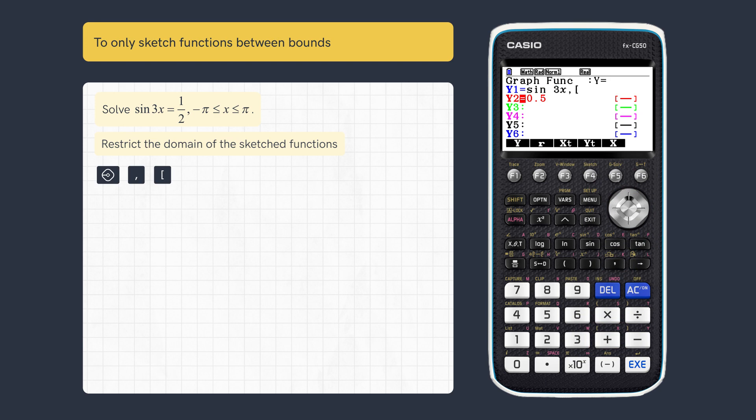Enter the lower bound, then the upper bound, close the bracket and execute.